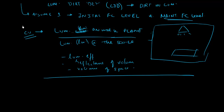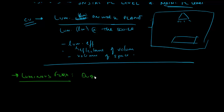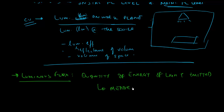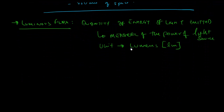Let's look at some terminology used in illumination engineering. Luminous flux is basically the quantity of energy of light emitted — in essence it's a measure of the power of the light source. The unit for luminous flux is lumens, which is what we were asked to find. So luminous flux is a measure of the power of the light.